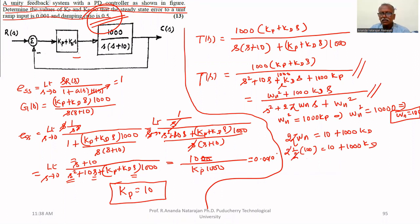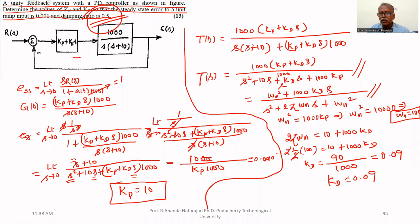With zeta equal to 0.5 and omega_n equal to 100: 2 times 0.5 times 100 equals 10 plus 1000·Kd. The 10s cancel, therefore Kd equals 90 divided by 1000, which equals 0.09.